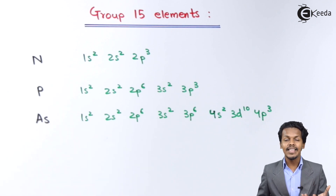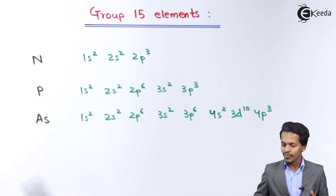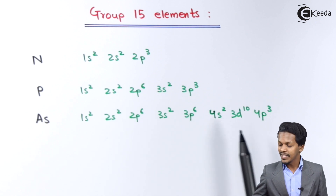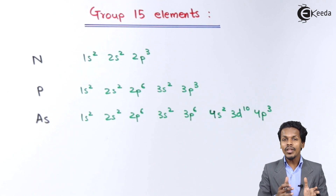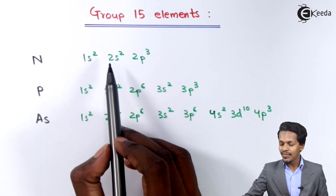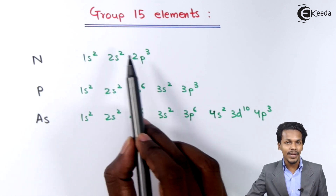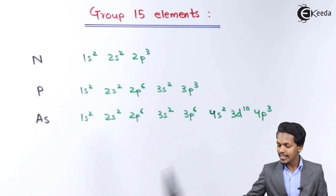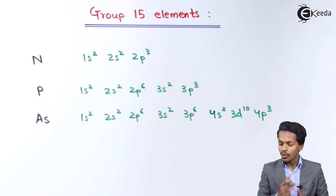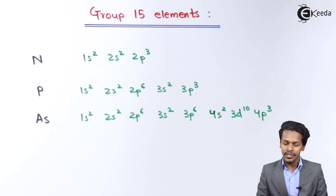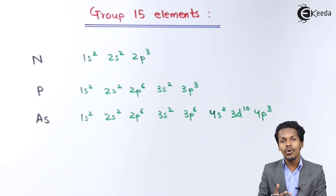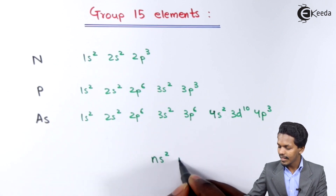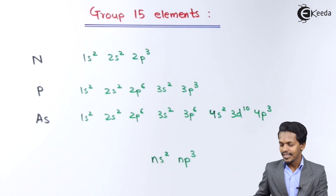Arsenic has an atomic number of 33, so we can write the electronic configuration as 1s2, 2s2, 2p6, 3s2, 3p6, 4s2, 3d10, and 4p3. The valence shell for Nitrogen is 2s and 2p, which is the second main shell. For Phosphorus it is the third principal shell, and for Arsenic it is the fourth principal shell. The general electronic configuration of group 15 elements is NS2, NP3.